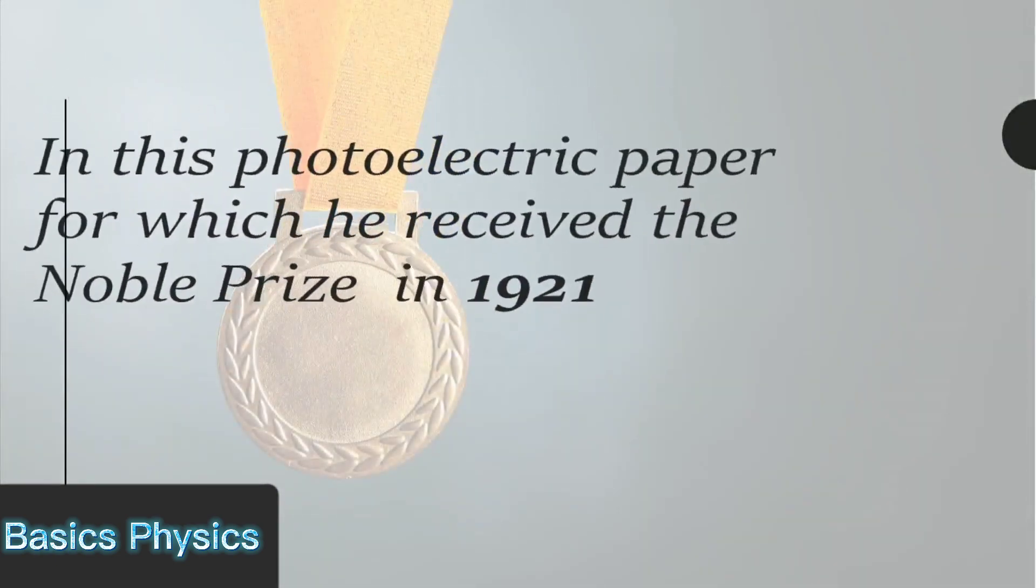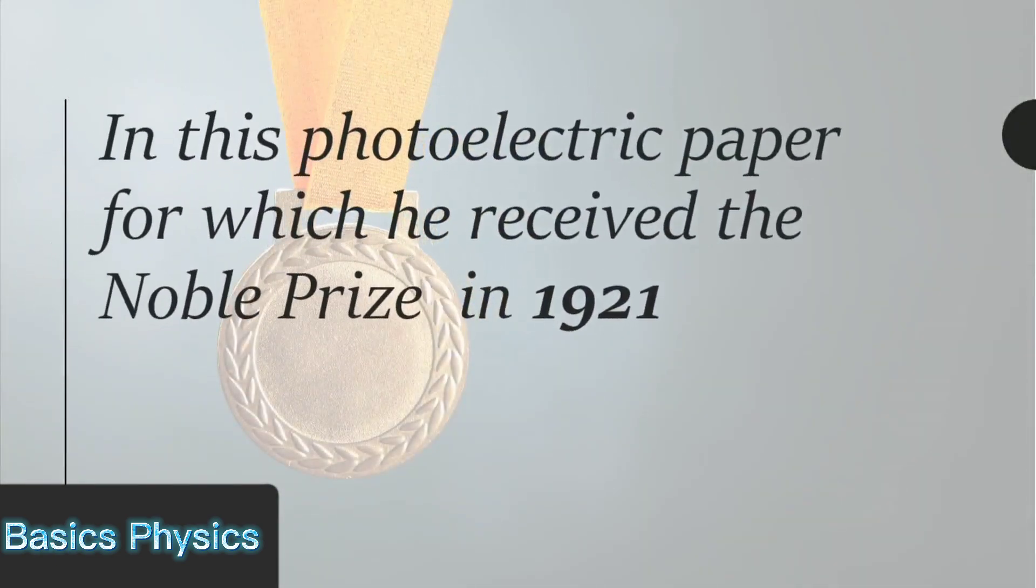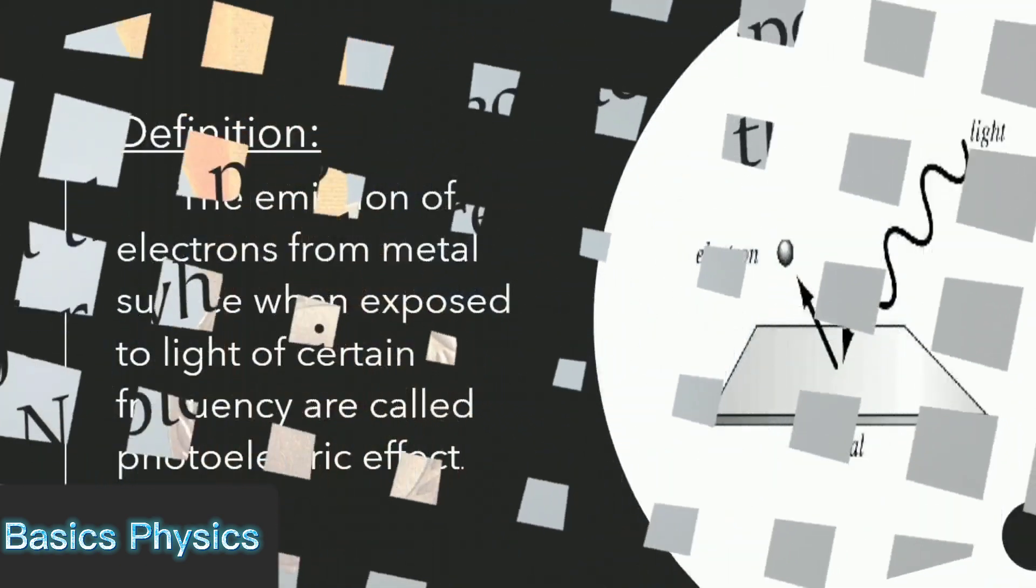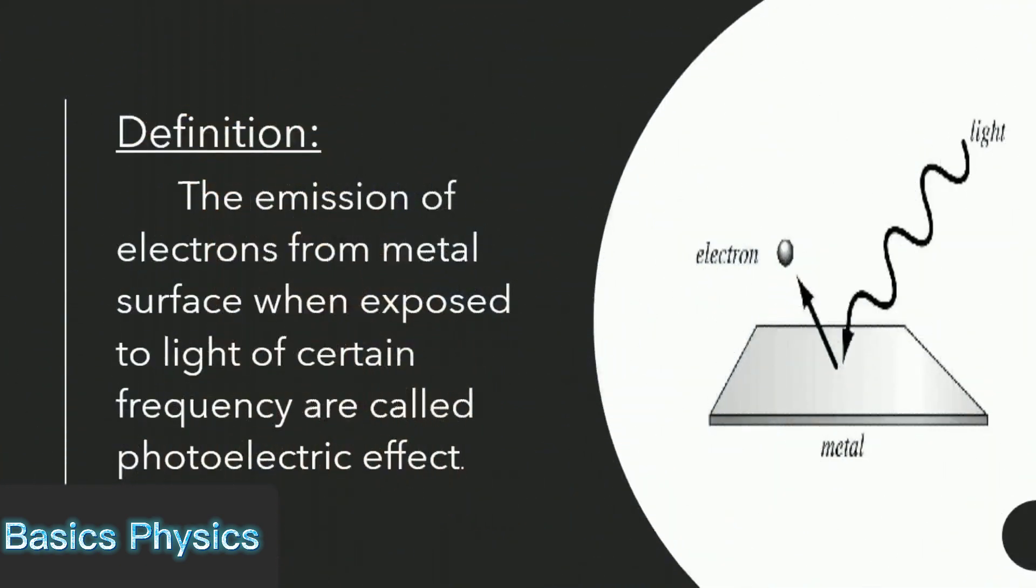In this photoelectric paper, for which he received the Nobel Prize in 1921, the emission of electrons from metal surface when exposed to light of certain frequency is called photoelectric effect. The emitted electrons are photoelectrons.